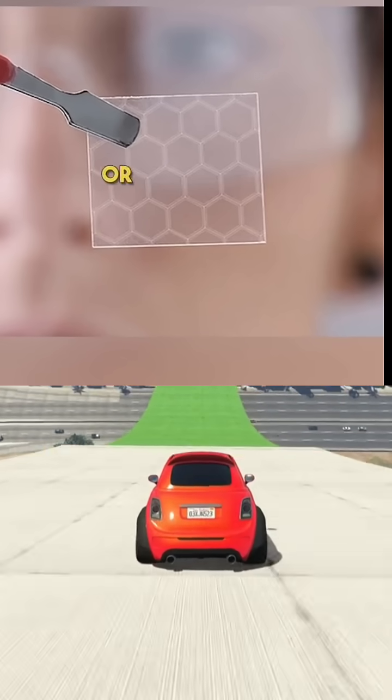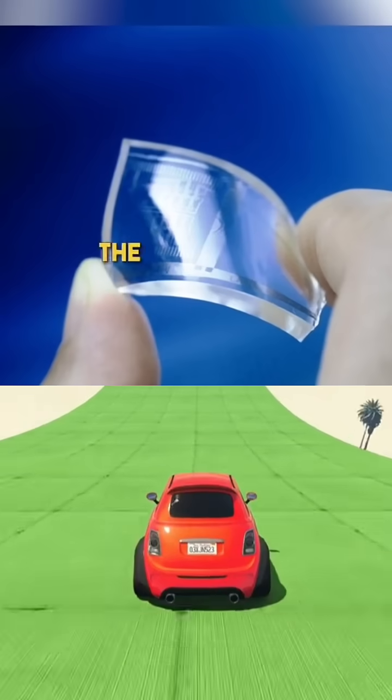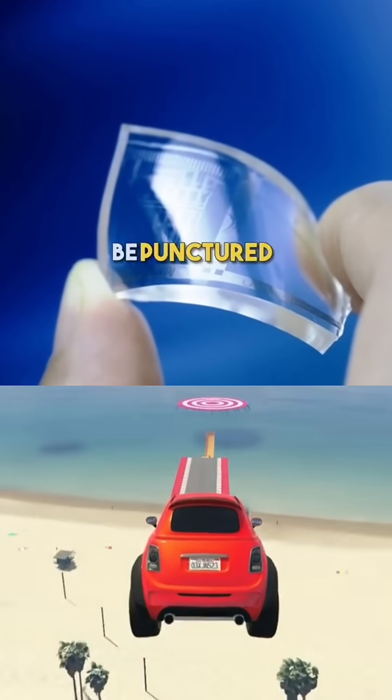It's lighter than wood or metal many times, and up to 300 times stronger than steel. The surprising thing is that a graphene sheet will not be punctured.